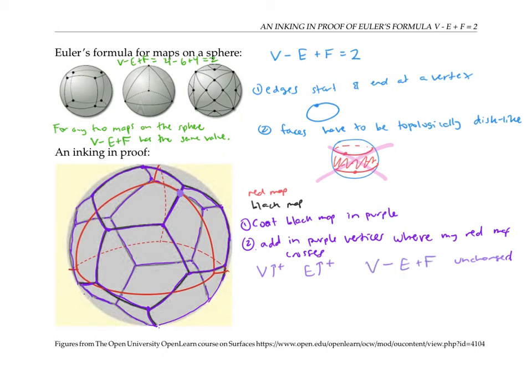Likewise, if I ink in a vertex here where the red crosses the purple, and here, and every other place where the red crosses the purple, I don't change my count of V minus E plus F.